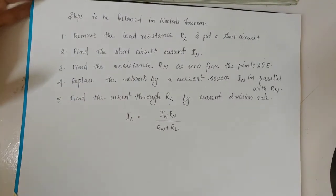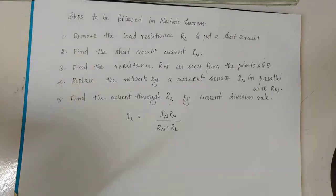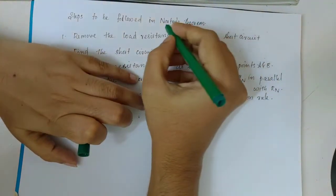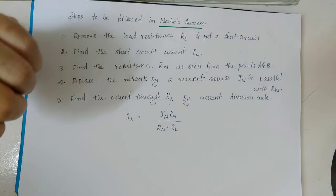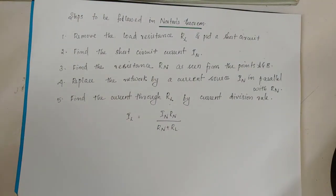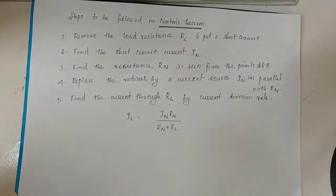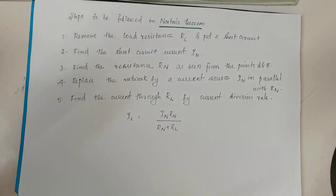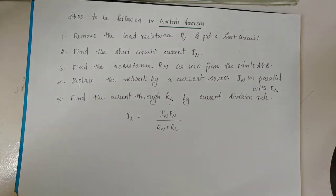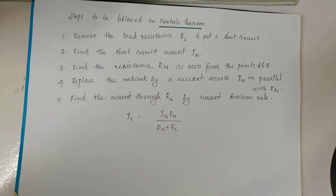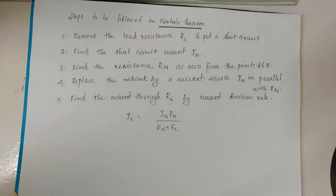Hi guys, next we are going to deal with Norton's theorem. Norton's theorem says that any two terminals of a network can be replaced by an equivalent current source and an equivalent parallel resistance. Thevenin's theorem gives an equivalent voltage source and a series resistance, whereas Norton's theorem gives an equivalent current source and a parallel resistance.